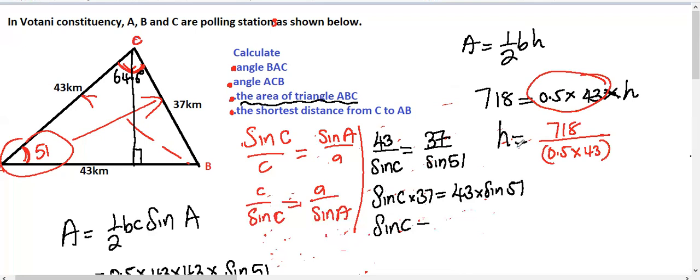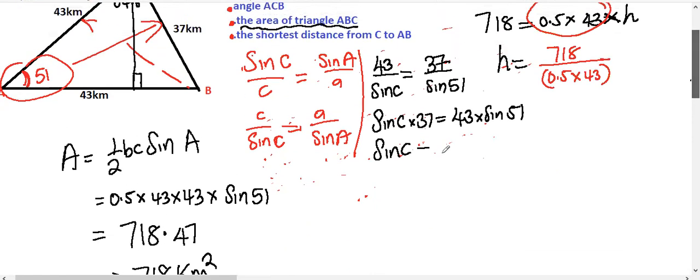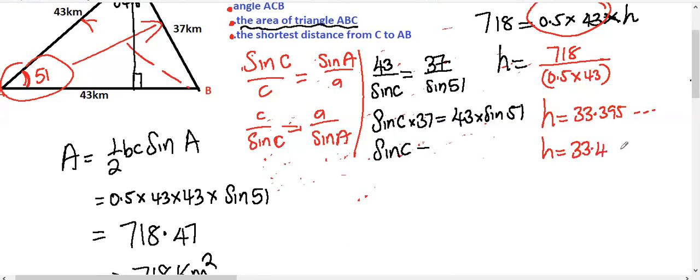Calculating that gives h = 718 / (0.5 × 43) = 33.395... Rounding to three significant figures as stated in the exam instructions, the shortest distance from C to AB is 33.4 kilometers.